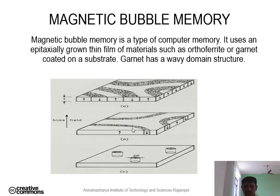The behavior of the strips is entirely different when a varying magnetic field is applied in a direction perpendicular to the film or strips. When the magnetic field is gradually increased on the strips or domains, they oppose the applied magnetic field. As a result, they begin to shrink.